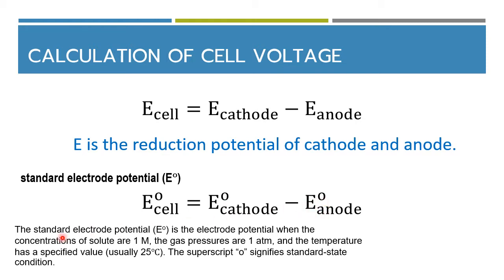The standard state, or standard electrode potential, is the electrode potential when the concentration of solute is one molar, the gas pressure is one atm, and the temperature is 25 degrees Celsius. We use the superscript zero to signify standard state conditions.